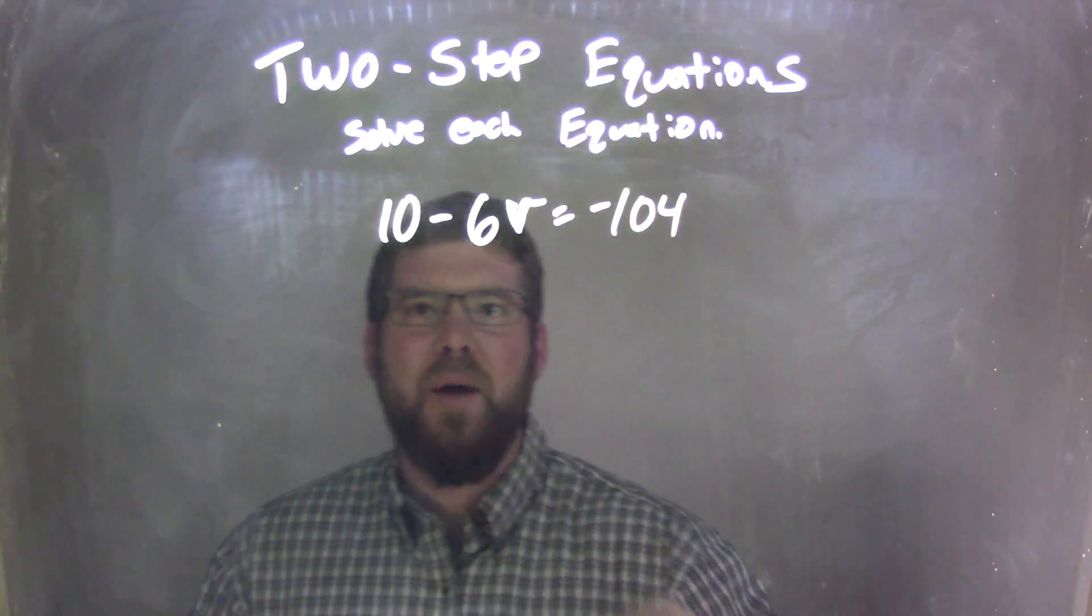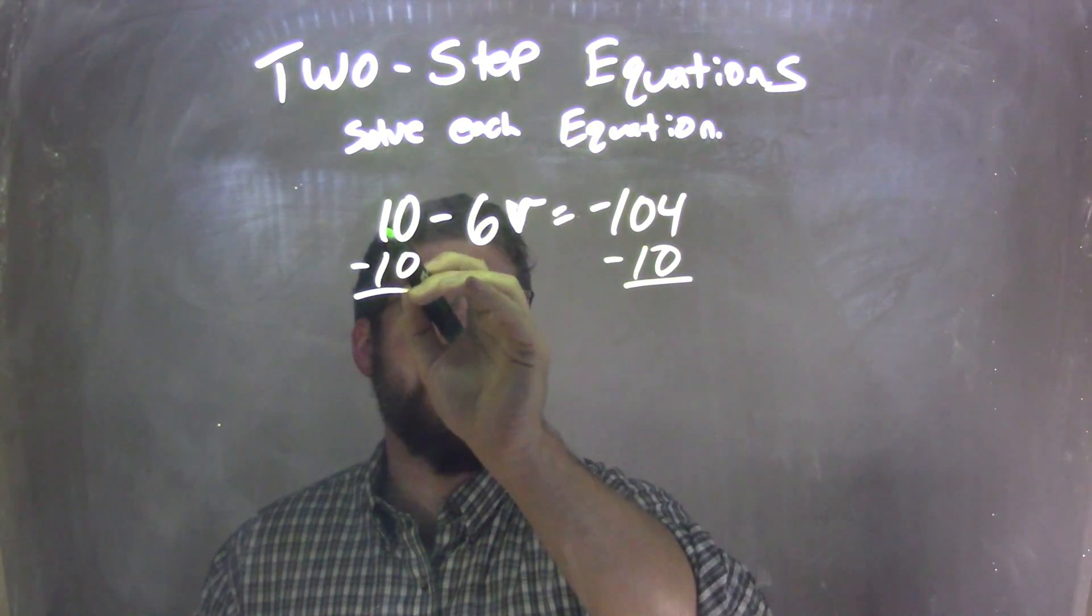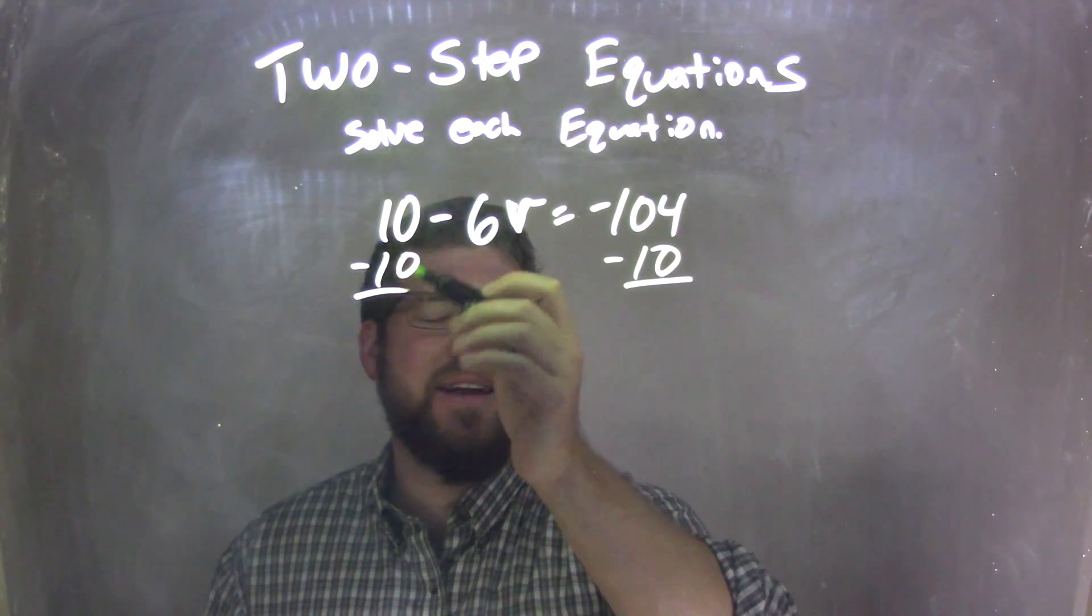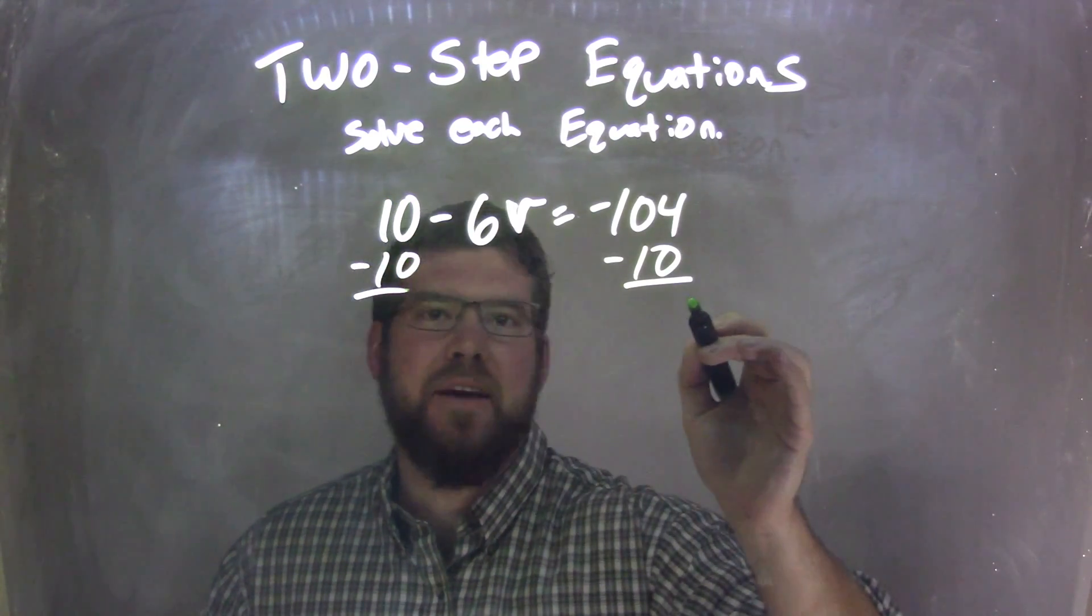My first step would be to subtract 10 from both sides. There's like a plus 10 there, right? But if I subtract, I'm going to get rid of that 10. Be careful, a lot of people see that negative and think, oh, I need to add 10. No, think about what can cancel this 10—subtracting 10 from both sides.